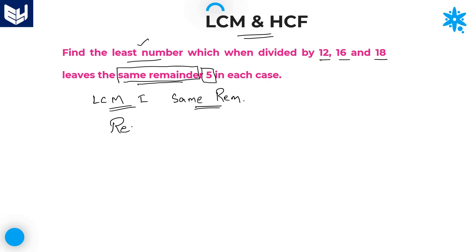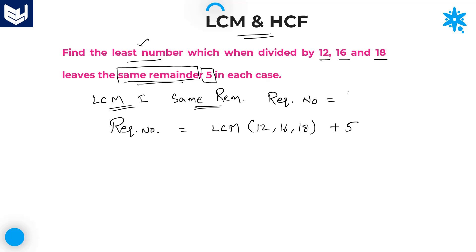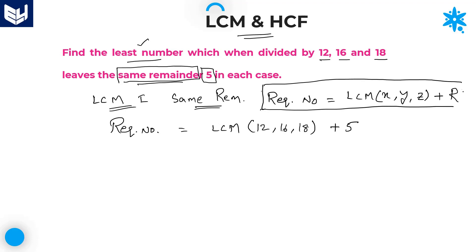The required number for this kind of problem: if you want the exact least number which is exactly divisible by all these numbers, you directly take the LCM. But every time you need a remainder of 5 in each case, you need to add that remainder. The required number of this model is equal to LCM of X, Y, Z — where X, Y, Z are the given numbers — plus the remainder R which is mentioned in the given problem.